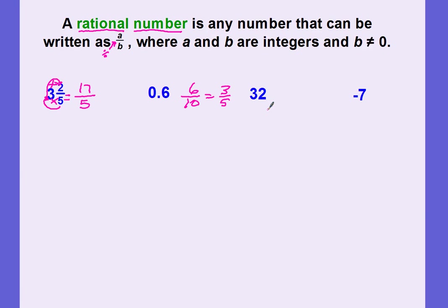So mixed numbers are rational numbers. Decimals are rational numbers. What about whole numbers — are these rational numbers? How can I write 32 in fraction form so that it still equals 32? All you have to do is put it over 1: 32 over 1. It's in fraction form and it still equals 32. So whole numbers are rational numbers. What about negative numbers — this negative 7? We can do the same thing and just put it over 1. It's still going to equal negative 7. So to determine if a number is a rational number, you should be able to write it in fraction form, and we've shown that mixed numbers, decimals, whole numbers, and negative numbers are all rational numbers.